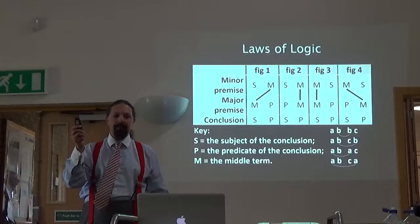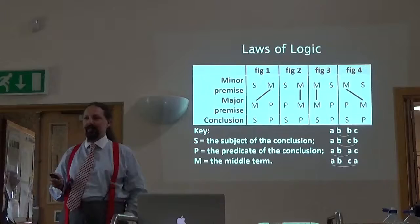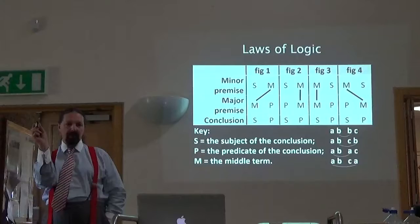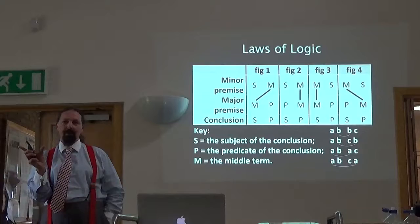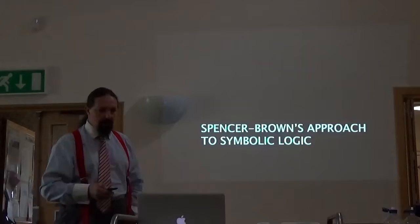I'm consistently putting the minor premise first. The position of the middle term in the first figure is that they're close together in the middle. In the second figure, they're both the predicate term of the propositions. In the third figure, they're both the subject terms. And in the fourth figure, they're on the outside. There are four figures in total.